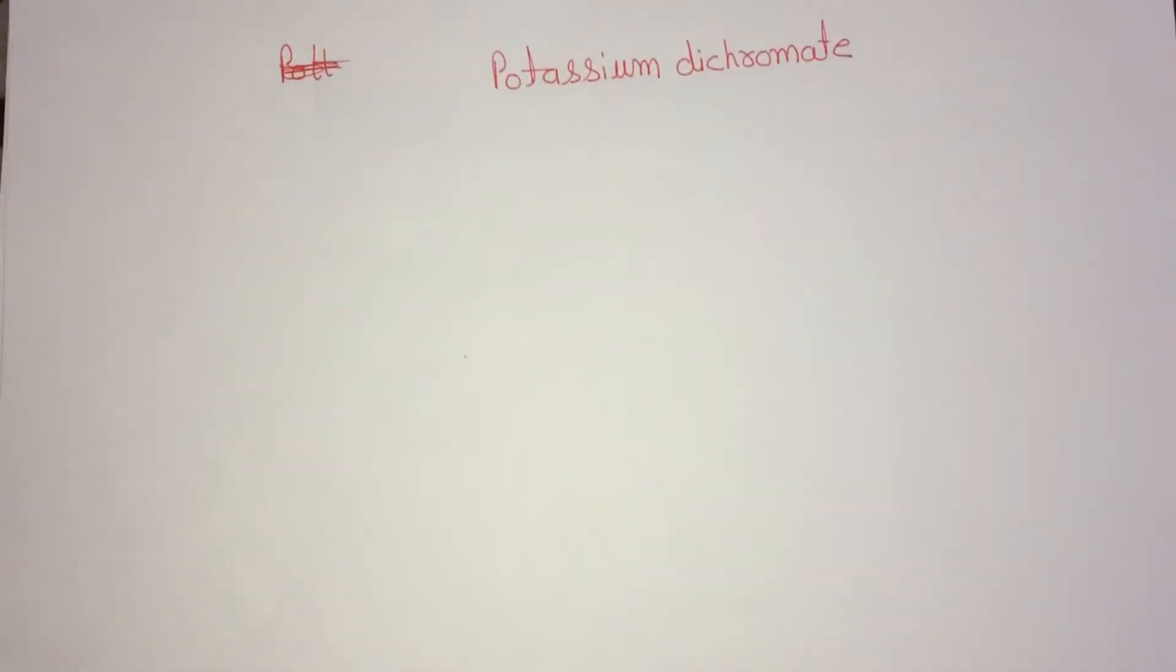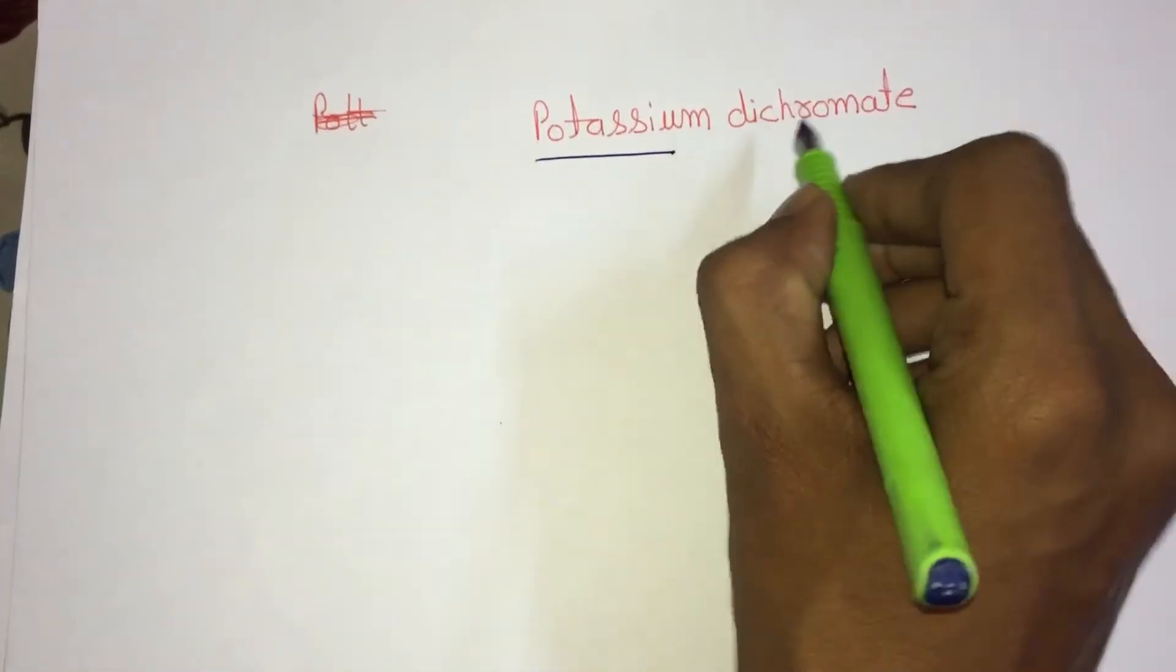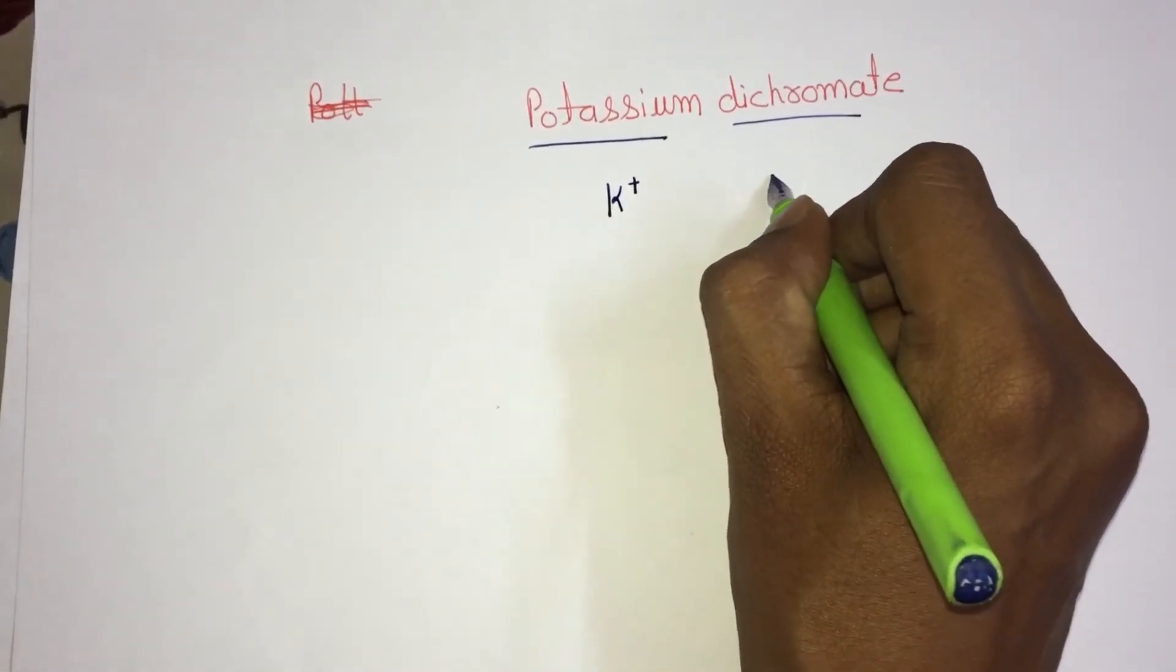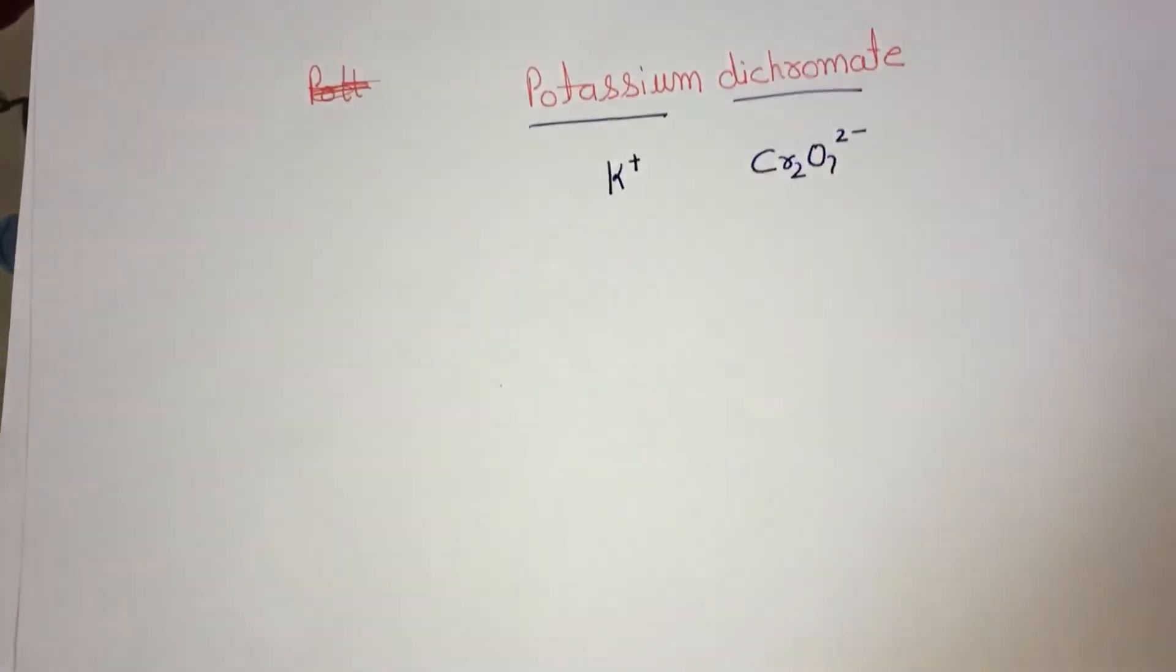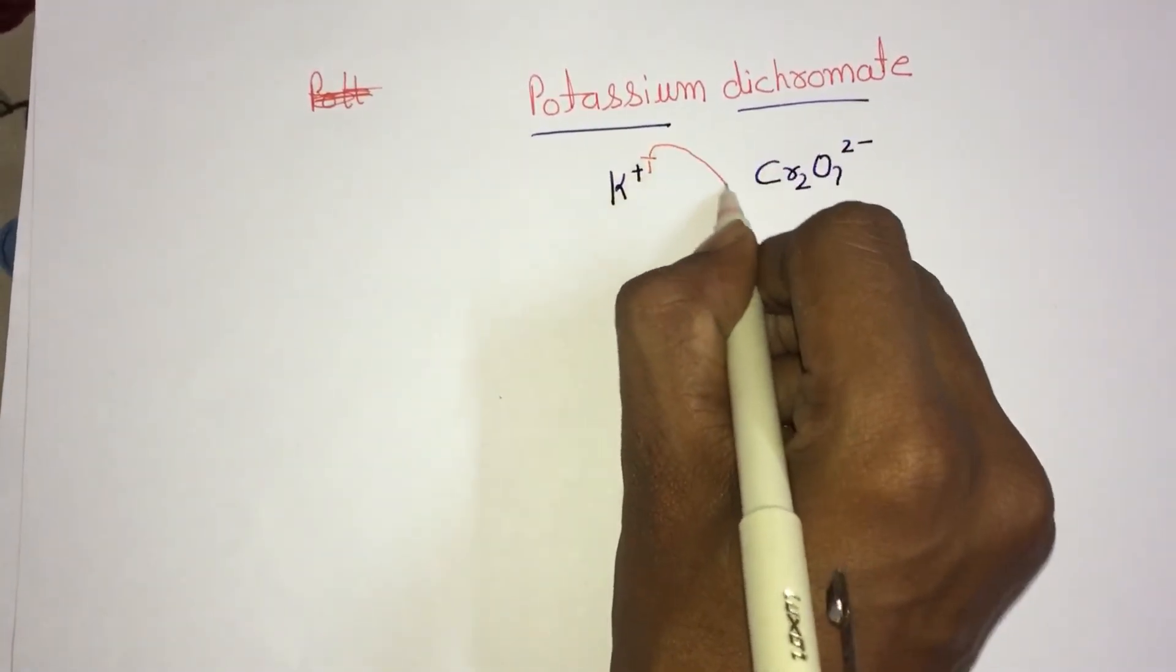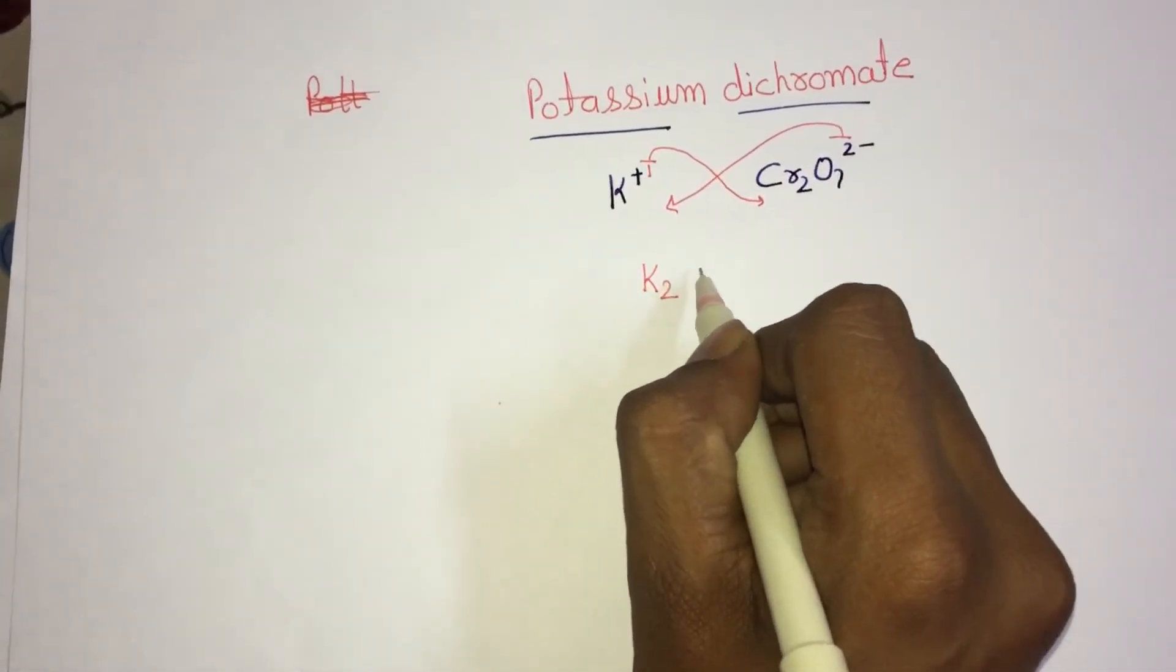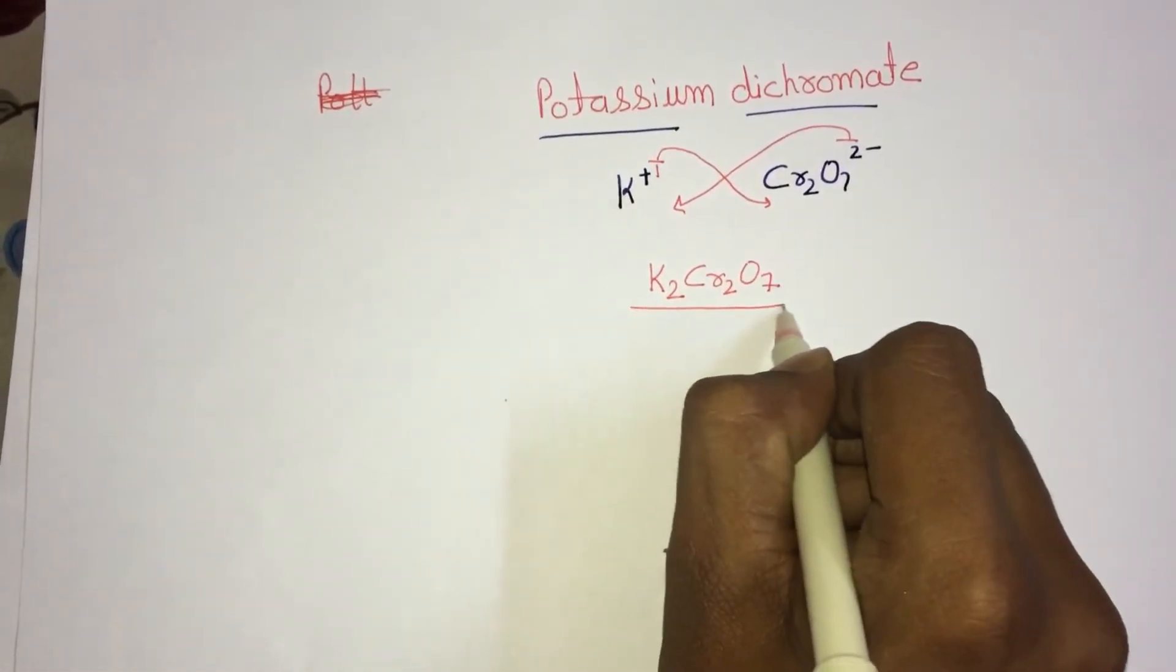Let's write the formula of potassium dichromate. Potassium is K+, dichromate is Cr2O7 2-. The valencies are exchanged: one goes to dichromate, two comes to potassium, and the formula is K2Cr2O7.